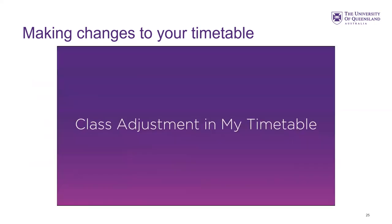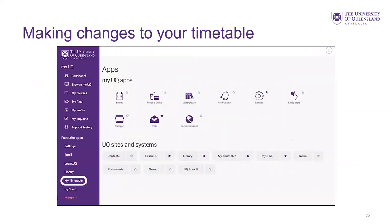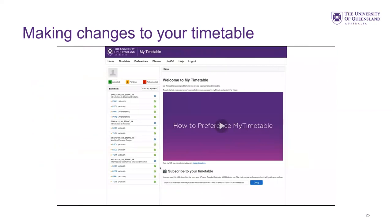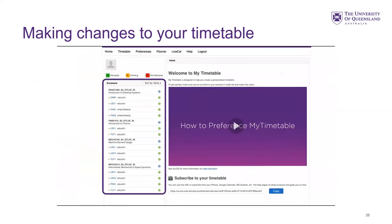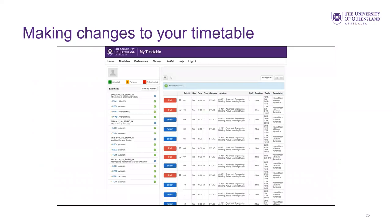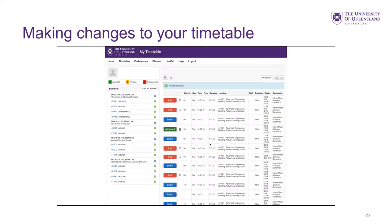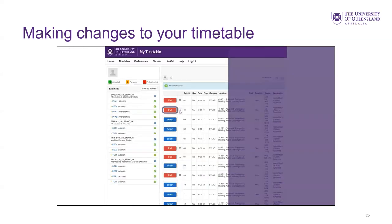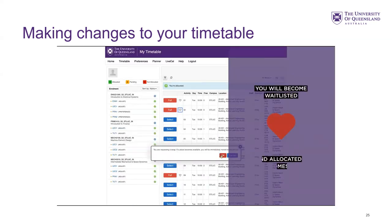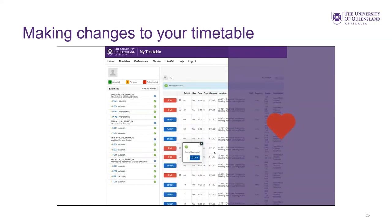You now have your personalized timetable, accessible through the MyUQ portal via the timetable application on the left-hand side toolbar. If your situation changes and your timetable no longer suits, you can make changes during the class adjustment stage. On the left of the screen, view your enrolled courses — a green symbol means your classes have been allocated. Where places are available after allocation, click the select button next to your preferred class to change your allocation. If a class is full, click the heart icon to request a swap and be added to the waitlist; you'll be allocated if a place becomes available. You can deselect the swap request by clicking the heart icon again. If you see a clash, you will not be able to allocate to that class.